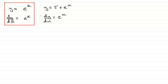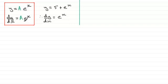But what happens if we have a constant in front of our expression? In any differentiation, if you've got some function of x and you multiply it by a constant — let's say we multiply it by the constant a — then the result is always that constant multiplied by the differential of your function of x. So this is the result we're going to get.